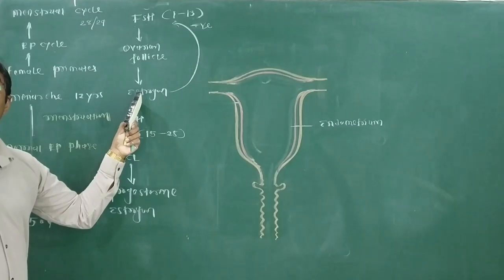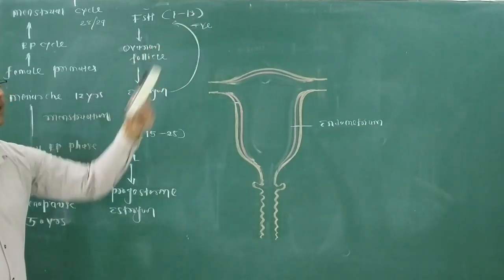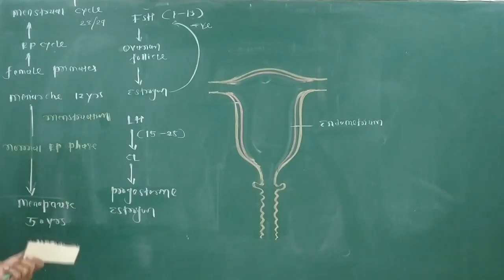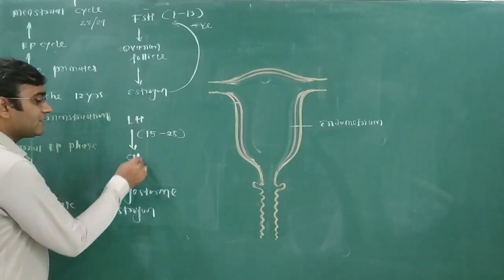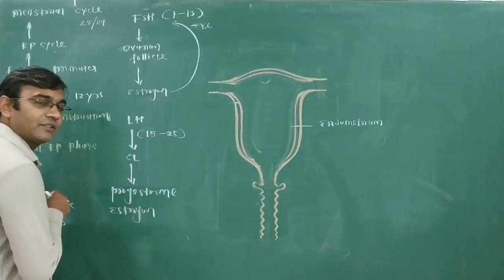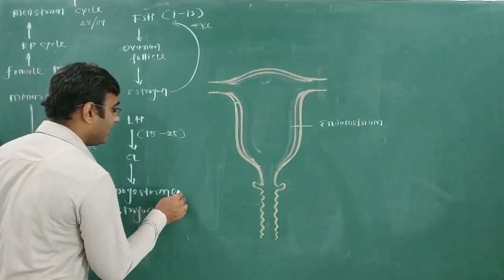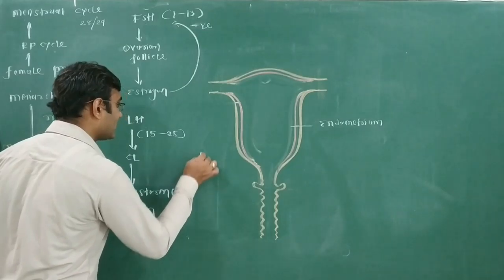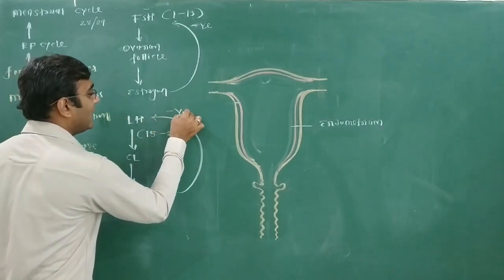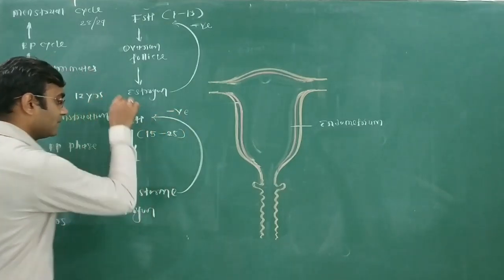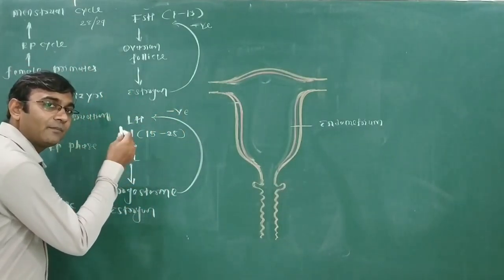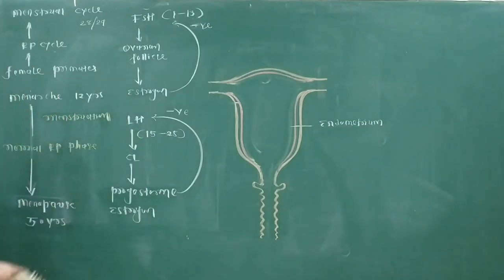So estrogen decreases towards day 28. Then in the next phase, days 15 to 28: LH increases, so the corpus luteum develops and secretes progesterone and estrogen. Here also, negative feedback occurs — increased progesterone concentration leads to LH decreasing, so the corpus luteum regresses and degenerates.